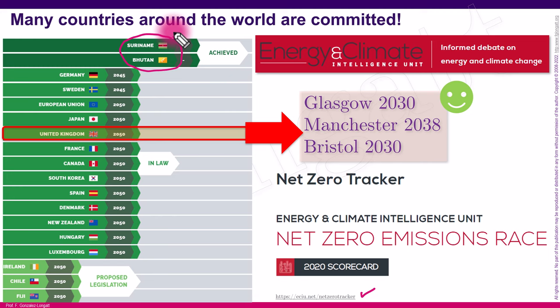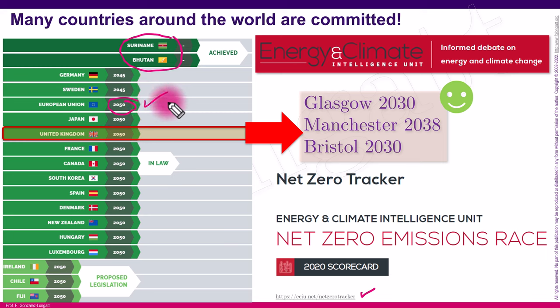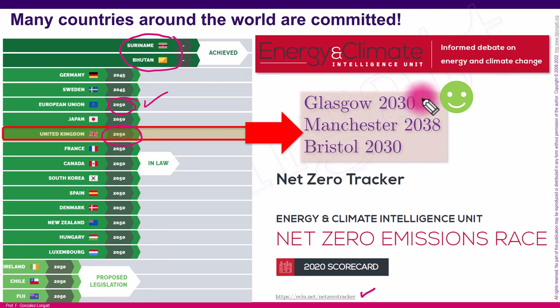In those countries, hydropower plays a very important part of the generation mix, so reaching net zero is not as challenging as in other countries. Some countries are already committed by law: Germany by 2045, Sweden by 2025, the European Union as a block by 2050, and the United Kingdom by law by 2050. However, some local councils inside GB have more ambitious targets — Glasgow aims for net zero by 2030, Manchester by 2038, and Bristol by 2030.